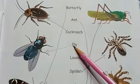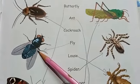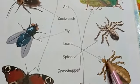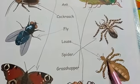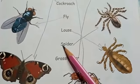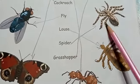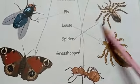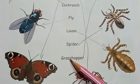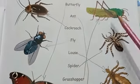Next, fly — F-L-Y. Next, louse. Next, spider — S-P-I-D-E-R. Next, grasshopper — G-R-A-S-S-H-O-P-P-E-R.